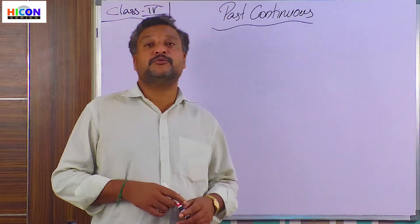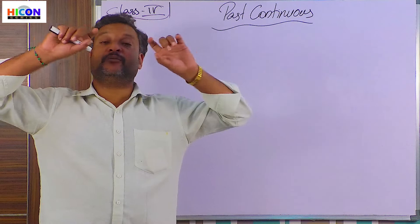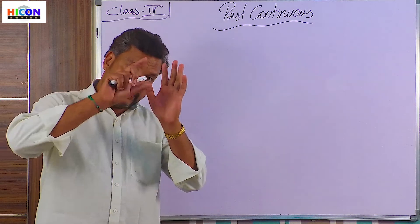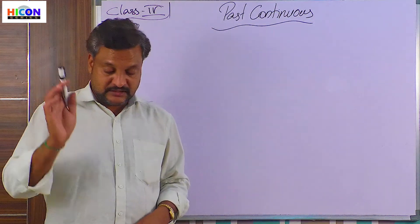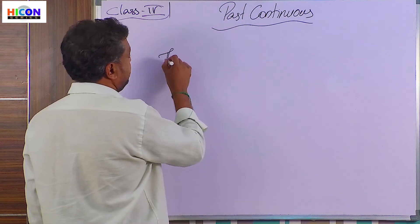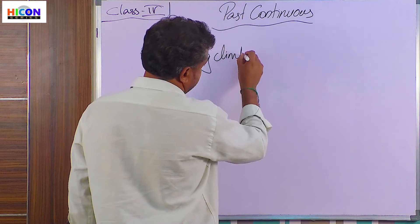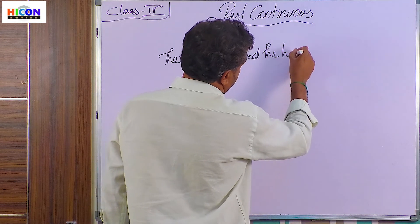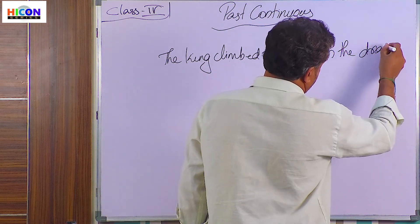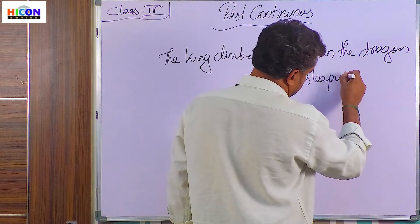We use past continuous tense when we want to say something that was happening and continuing at a point of time in the past. For example: 'The king climbed the hill when the dragon was sleeping.' Here the verb 'was sleeping' shows an action continuing in the past.